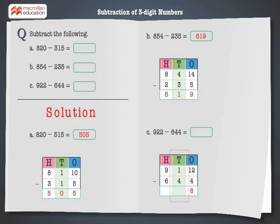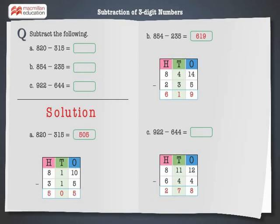Next, subtract the 10s. As we can see, 1 is smaller than 4, hence we cannot subtract 4 from 1. Therefore, regroup as 8 hundreds and 11 tens. Now subtract: 11 minus 4 is equal to 7 tens. Finally, subtract the 100s: 8 minus 6 is equal to 2 hundreds. Hence, 922 minus 644 is equal to 278.